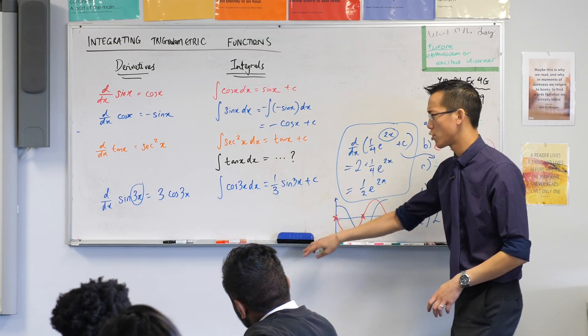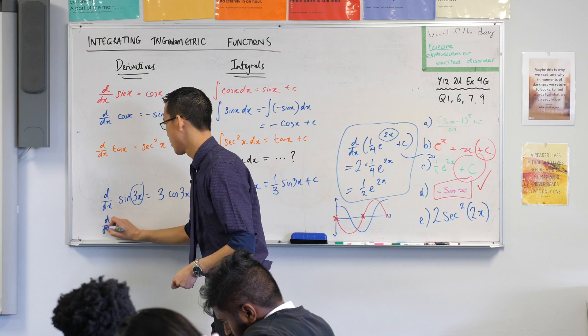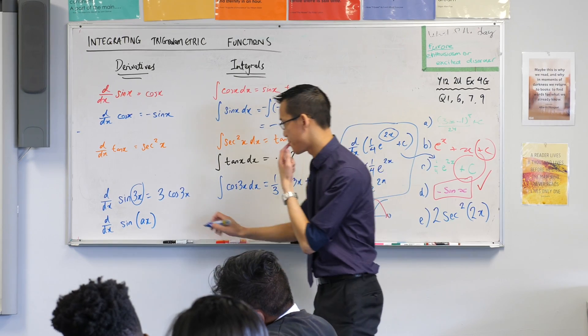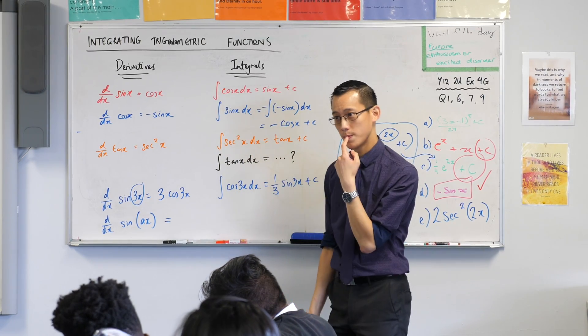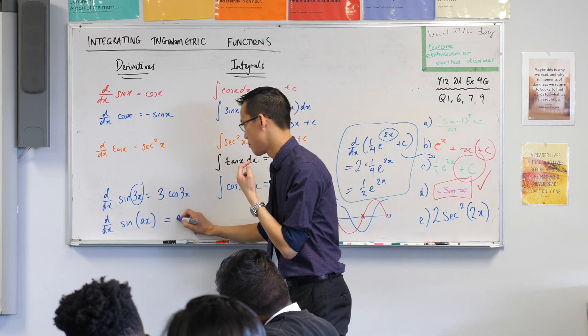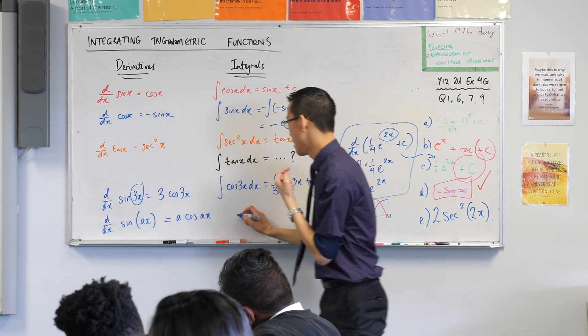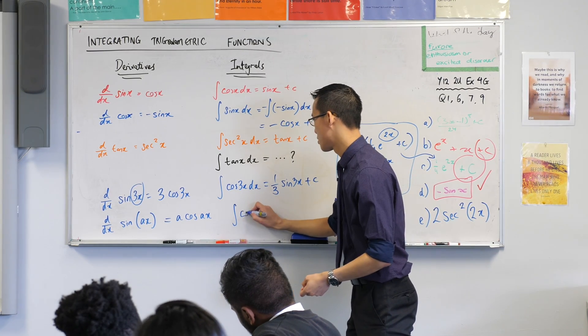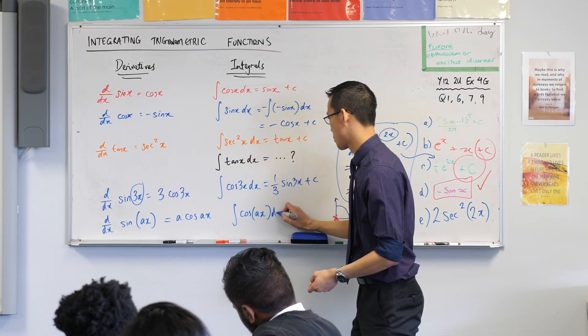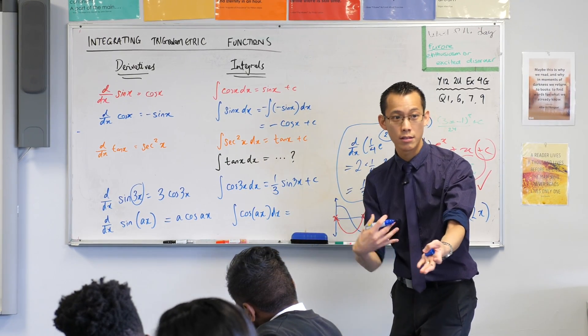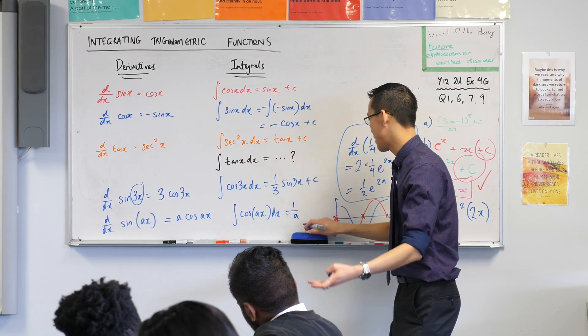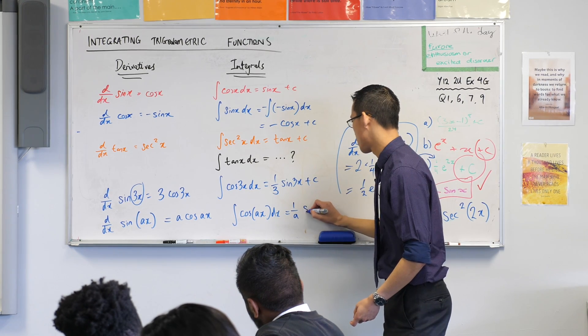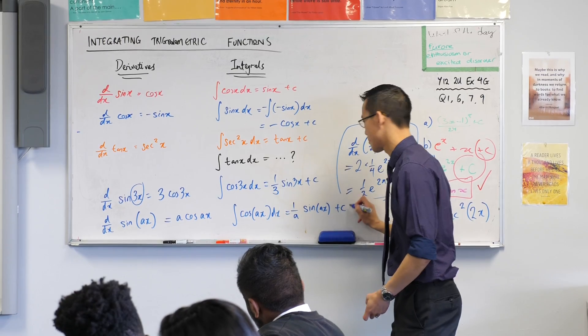We can generalize this, couldn't we? If we had the derivative of sine of any coefficient out the front. What would that equal? A cos ax. Very good. And so you could say, well, there's an equivalent integral statement of that. Cos of any multiple of x with respect to x, it's not multiplication like you told me, it's division. So that's 1 over a, that's me dividing by a, sine ax.